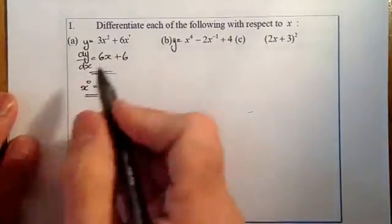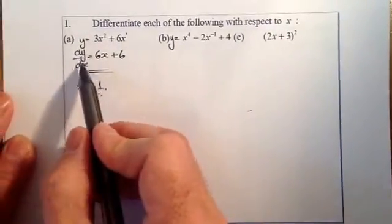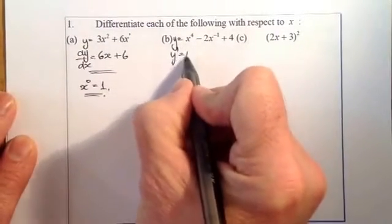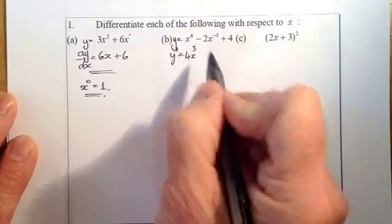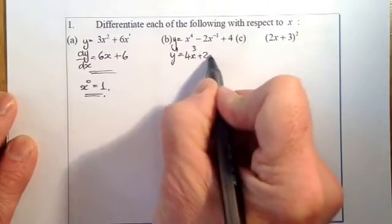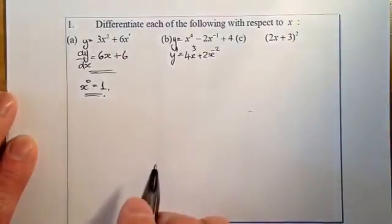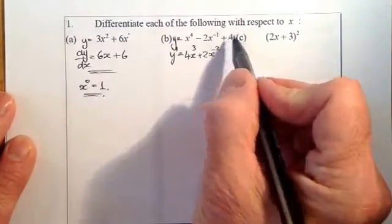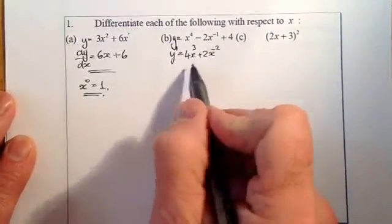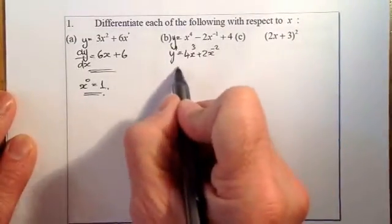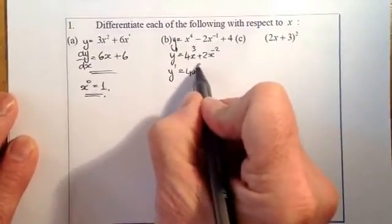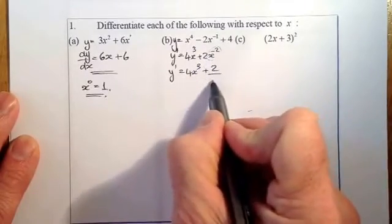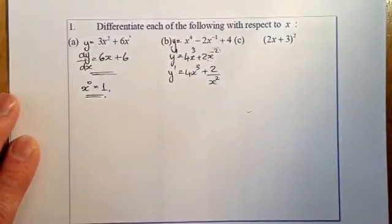For the next expression, dy/dx or y-dashed: differentiating gives 4x³. For the minus x⁻¹ term, minus 1 times minus 2 gives plus 2x to the minus 2. The constant 4 disappears because 0 times 4 is 0. Writing with a positive index: the coefficient stays on the numerator and x goes to the denominator as x².